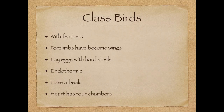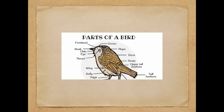Next is birds. Birds are a unique class because they can fly and are covered with feathers. They lay eggs with hard shells — a chicken egg is a familiar example. They are endothermic, meaning they can regulate their own body temperature and keep it constant. Most birds have a beak, and their hearts have four chambers. Their eggshells are also waterproof. Here's a picture of a bird showing its wings, beak, and tail feathers — the wings are actually forelimbs that have grown into wings.